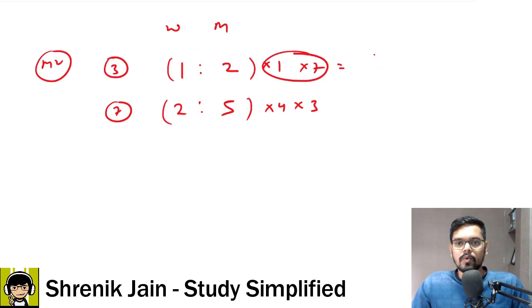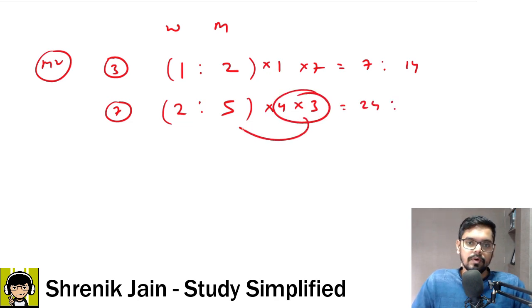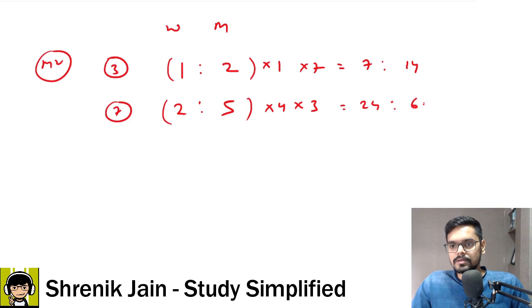And then what is the resultant? This 7 multiplied with 1, you are going to get 7. This 7 multiplied with 2, you are going to get 14. 4 3s are 12 multiplied with 2, you are going to get 24. 4 3s are 12 multiplied with 5, you are going to get 60.